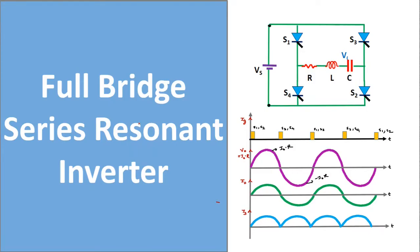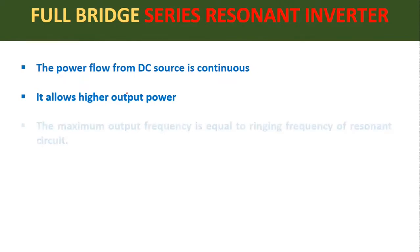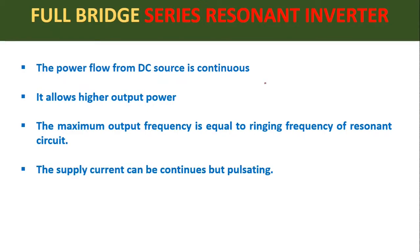Now let us see some important features of this full bridge series resonant inverter. First, the power flow from the DC source is continuous, therefore it allows higher output power. The maximum output frequency of this full bridge series resonant inverter is equal to the ringing frequency of the resonant circuit, whereas in the half bridge series resonant inverter the maximum output frequency is greater than the ringing frequency.